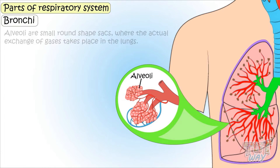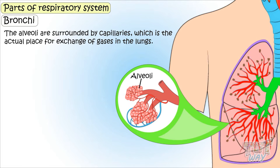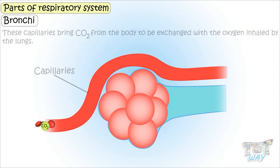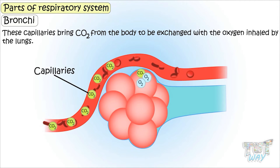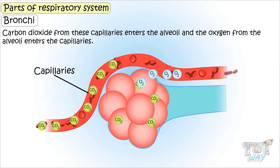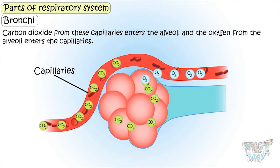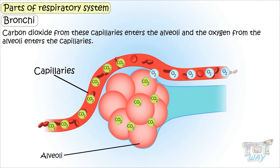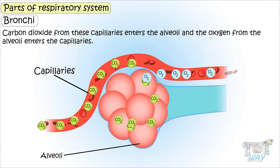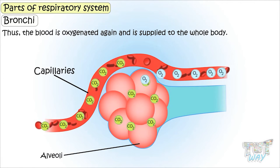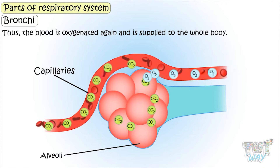These round-shaped alveoli are surrounded by capillaries, and this is the actual place for the exchange of gases in the lungs. The capillaries bring carbon dioxide from the body to be exchanged with the oxygen inhaled in the lungs. Carbon dioxide from the capillaries enters the alveoli, and the oxygen from the alveoli enters the capillaries. Thus, the blood is oxygenated again and supplied to the whole body.